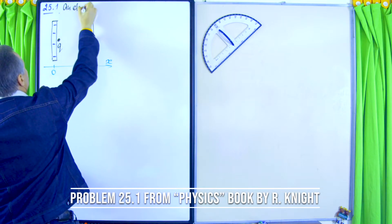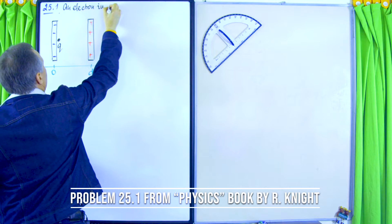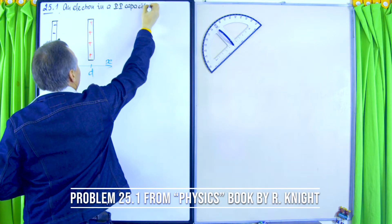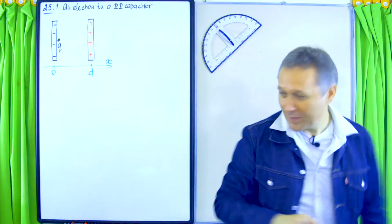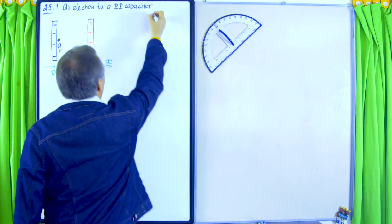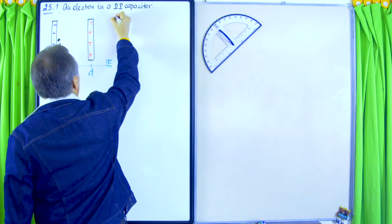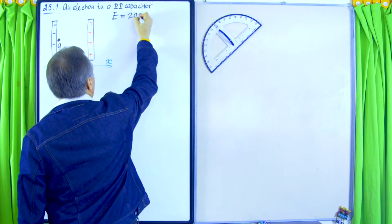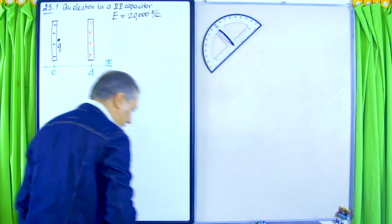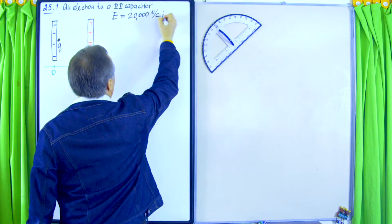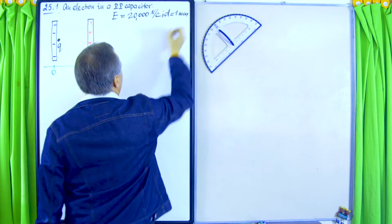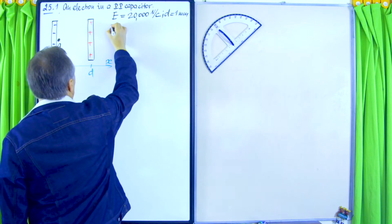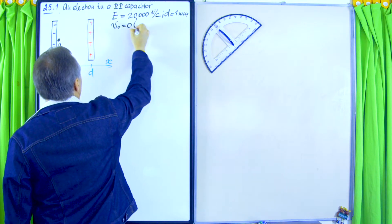We have an electron in a parallel plate capacitor — PP capacitor, it's too much to write parallel plate capacitor. Electric field strength is given: 20,000 newtons per coulomb. Spacing between plates is one millimeter, and the electron is released from the negative electrode, so the initial velocity of the electron is zero.